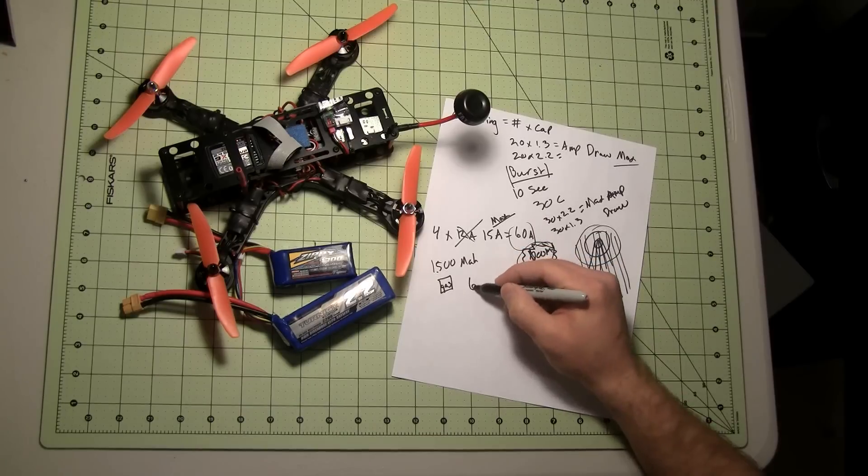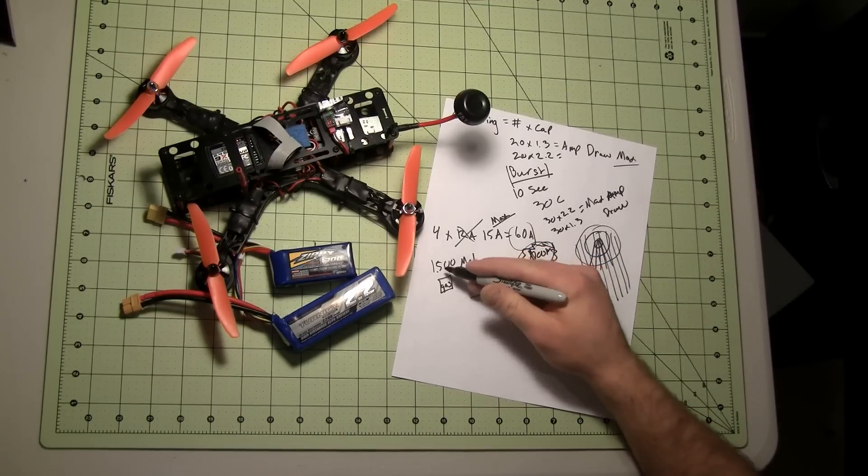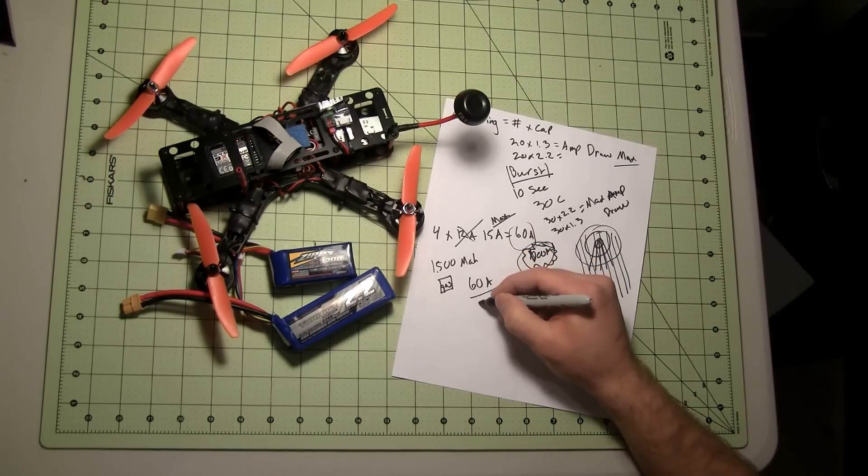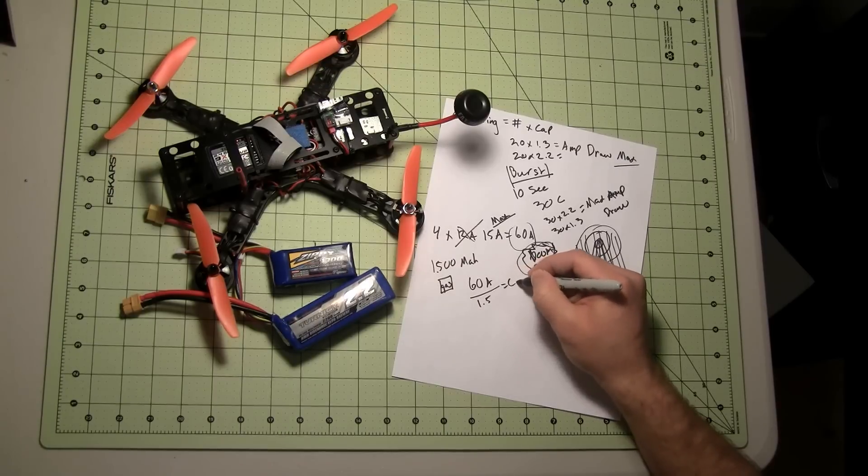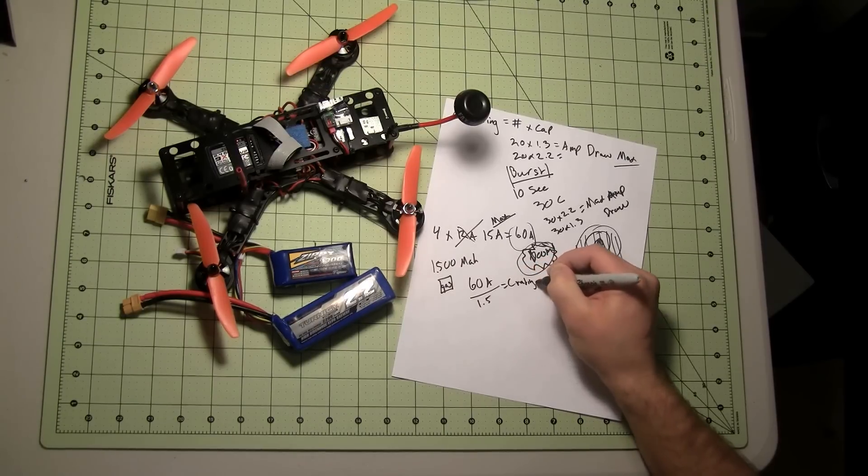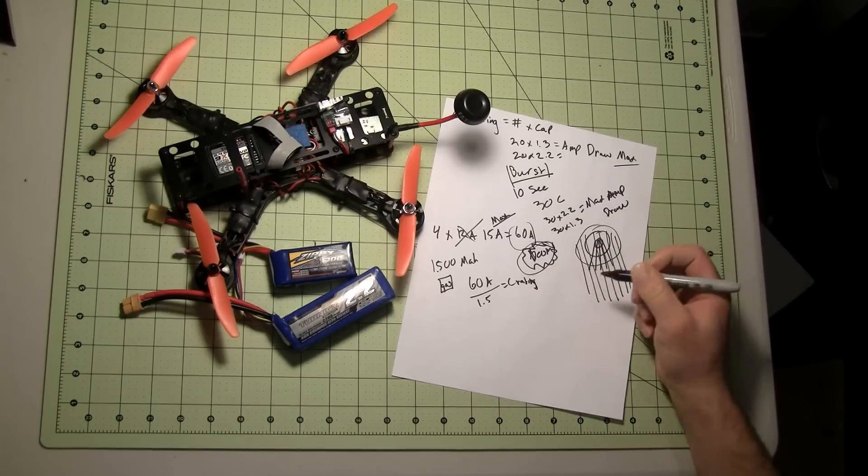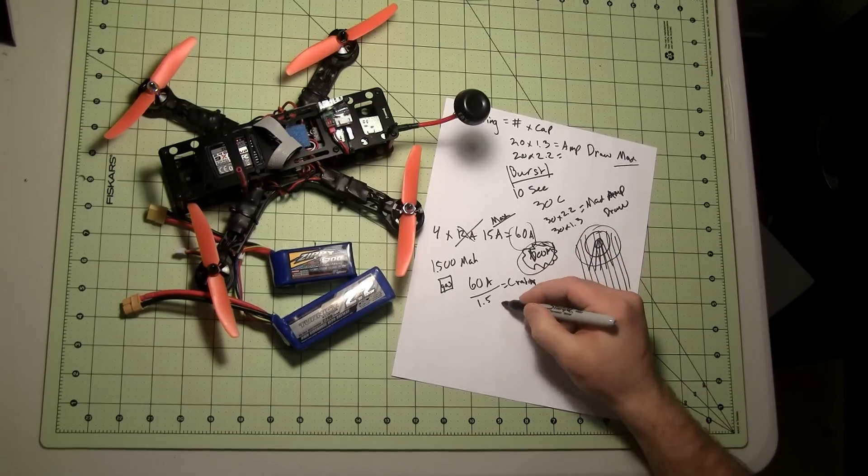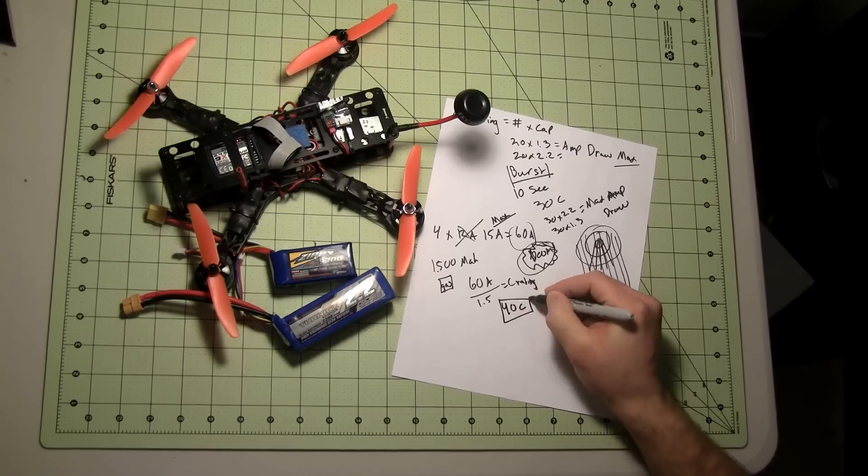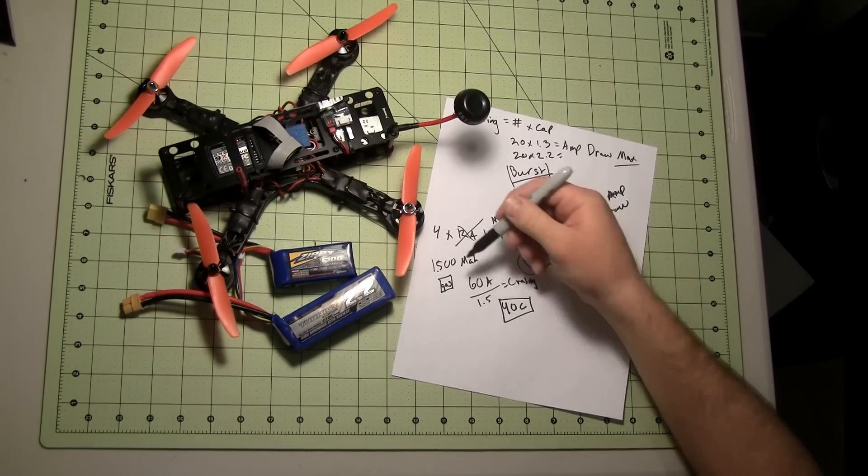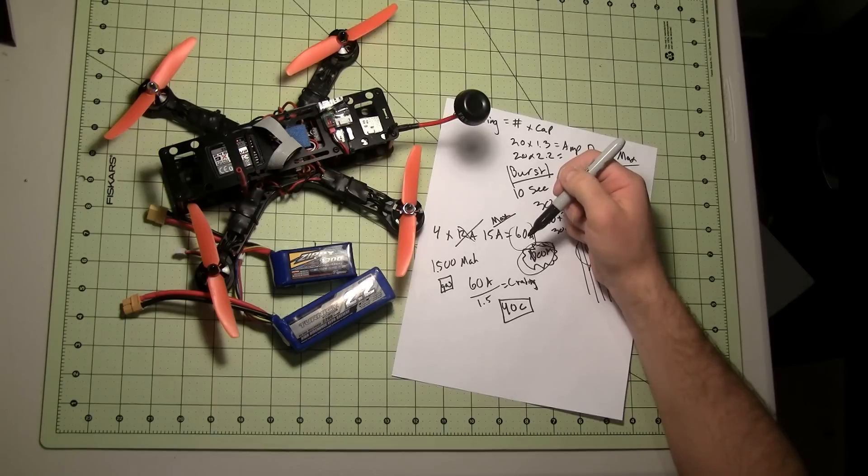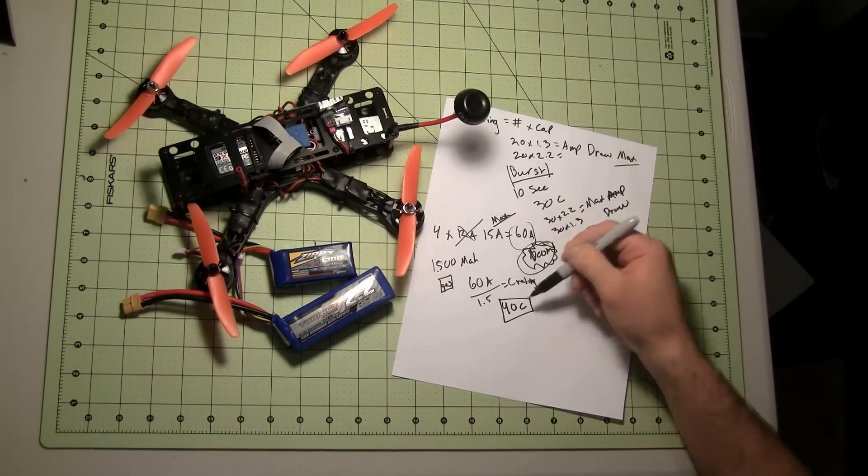I'm going to take 60 amps divided by the capacity, which would be 1.5, equals my C rating. So if we do the math, the most I can have is a 40 times C rating when I'm using a 1.5 milliamp hour battery, is 40C.